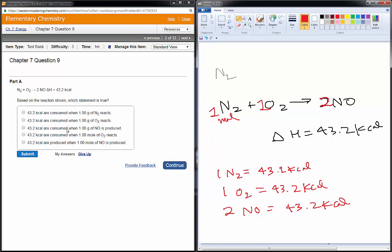So, this much is consumed if a gram of NO is produced? No, that much is consumed if two moles of NO is produced. Let's see, 43.2 kcals consumed when one mole of O2 reacts? That's exactly what this is saying. One mole of O2 reacts, that's the amount of energy consumed, so that's it.